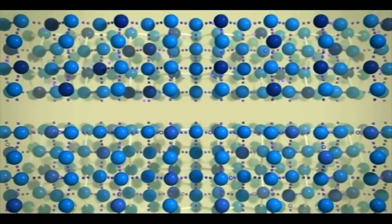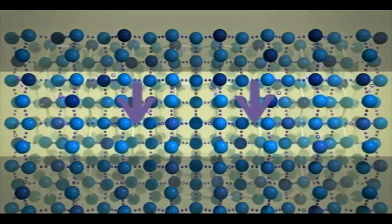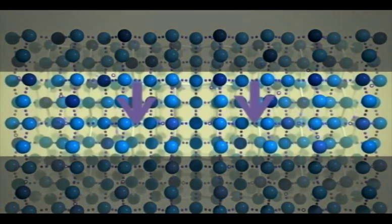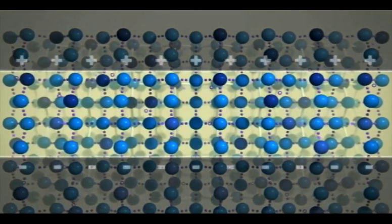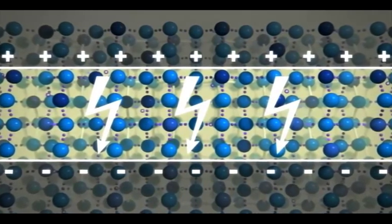If you bring an n-layer and a p-layer together, free electrons begin to move from the n-layer to fill the holes in the p-layer. A special junction forms that ultimately produces an electric potential in the material.